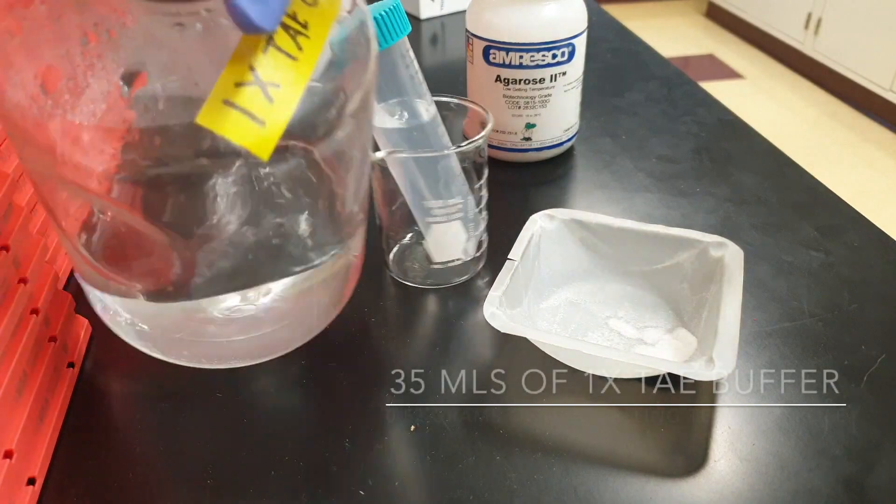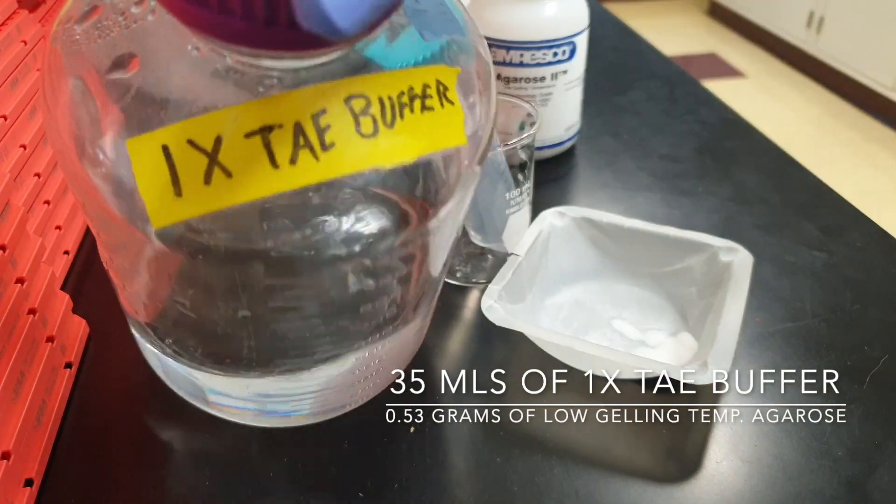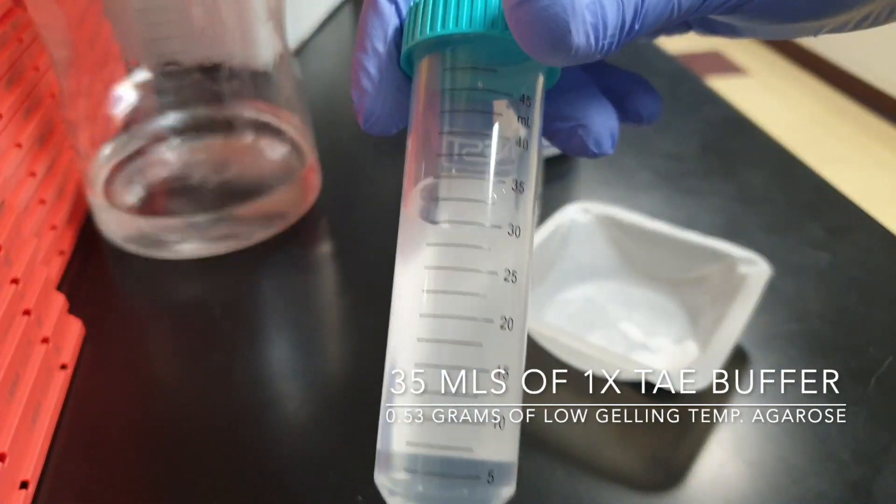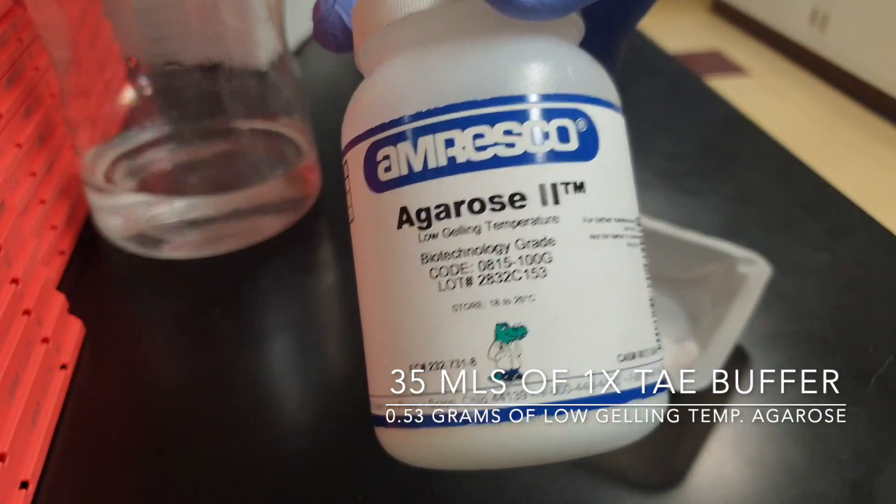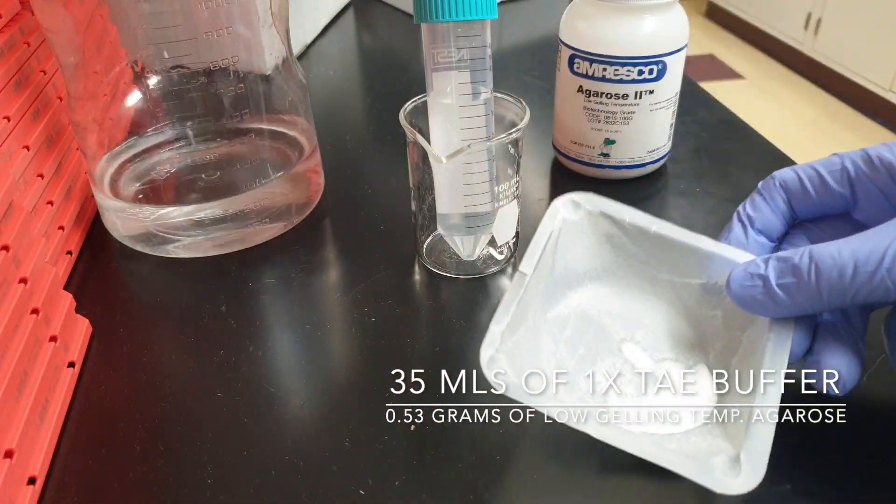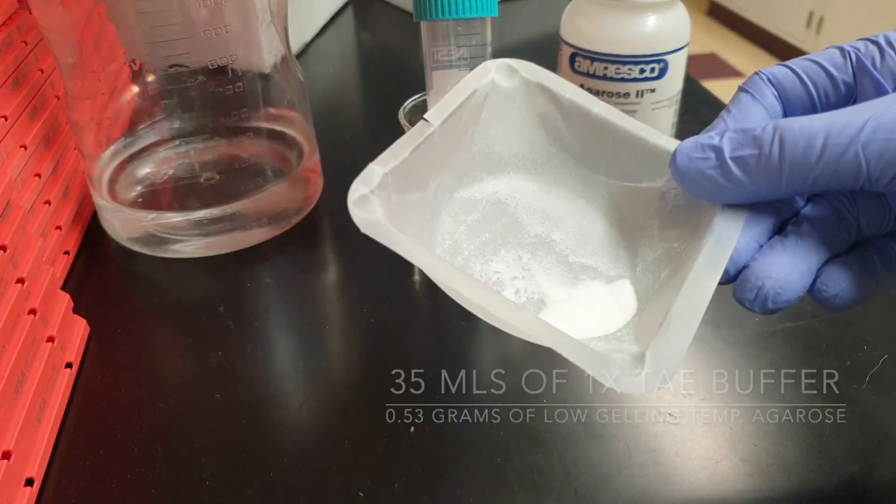So to start off with, I have one times TAE buffer, 35 ml of it and then I have my low gelling temperature agarose, 0.53 grams. So about half a gram.